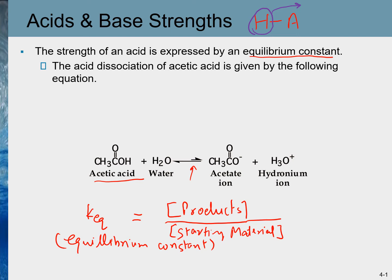In this example, our products will be the acetate ion and hydronium ion. Both of these will be products, and our starting material will be acetic acid in water. One thing to note is that water in this case is a solvent, and solvent concentration never changes — solvent concentration is always constant.